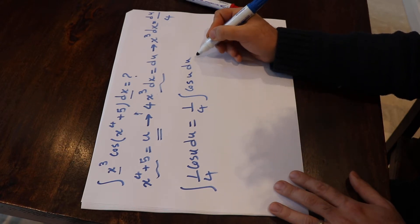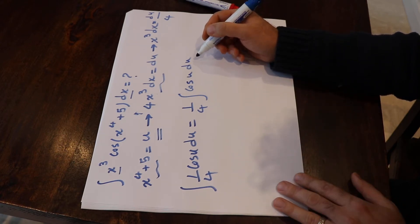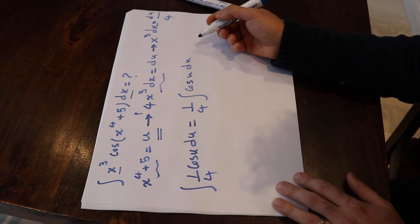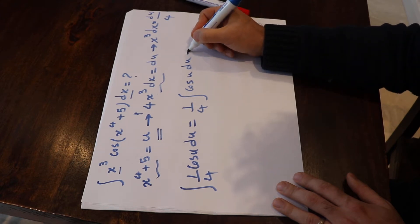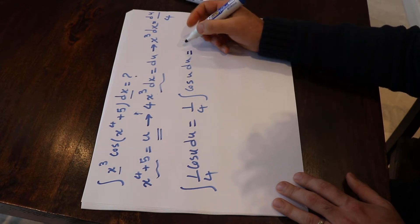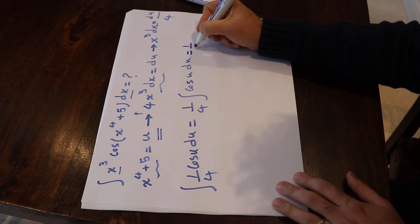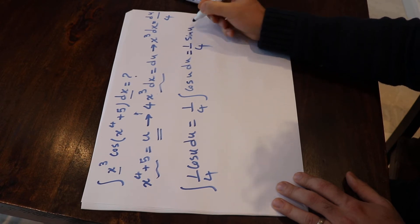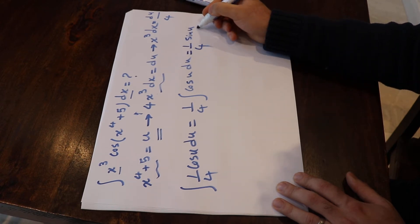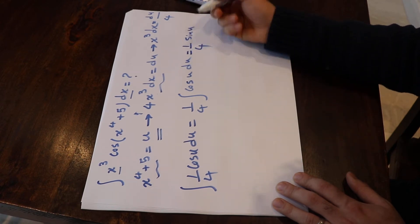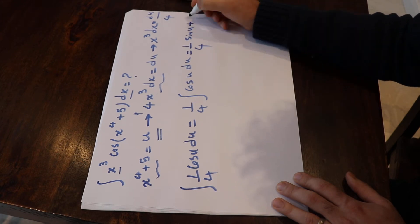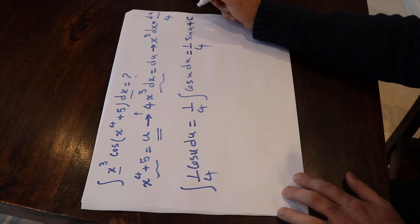The integral of cosine u, you know it — that is equal to sine u. So the result will be 1 divided by 4 times sine u, because the derivative of sine u is cosine u, plus C, the constant of integration.